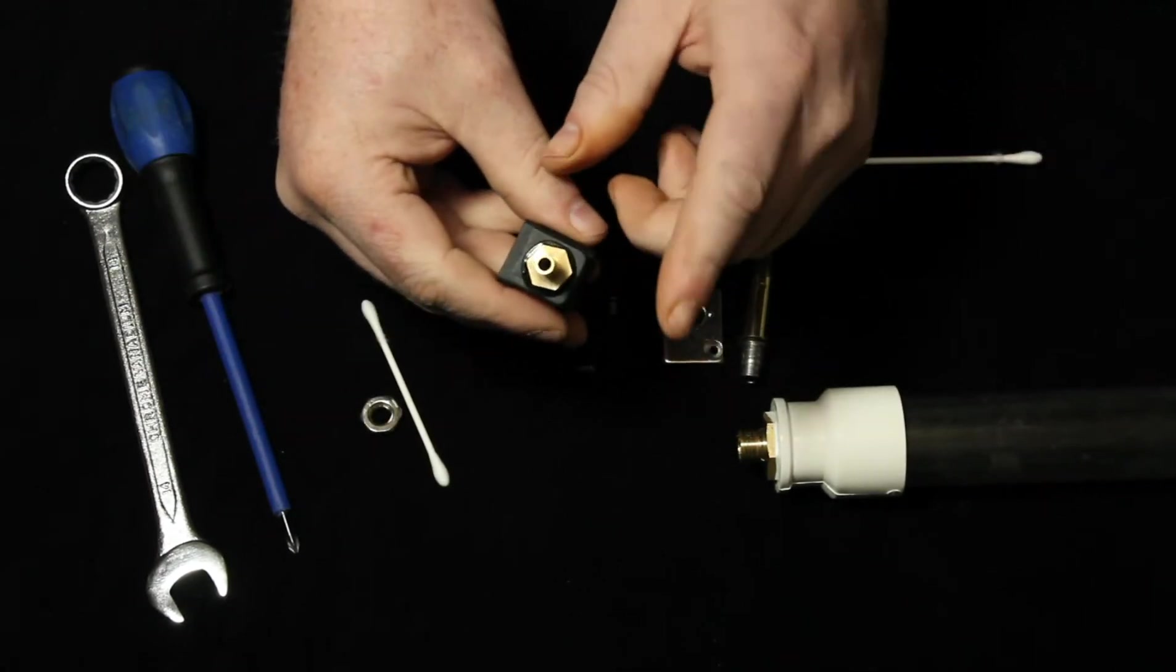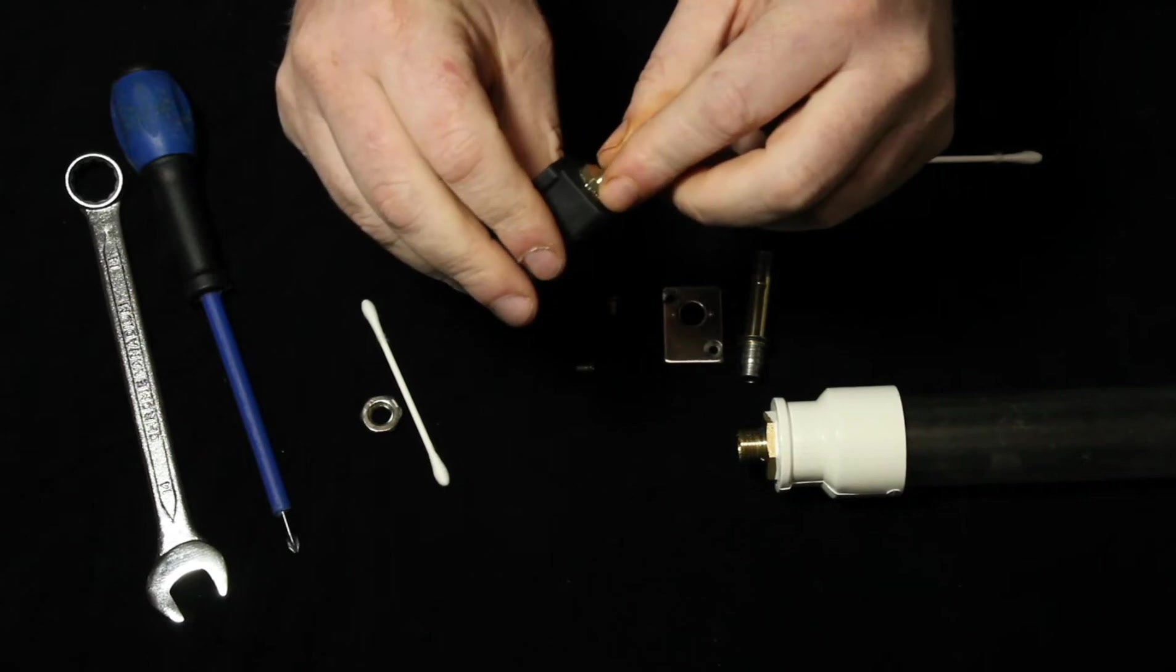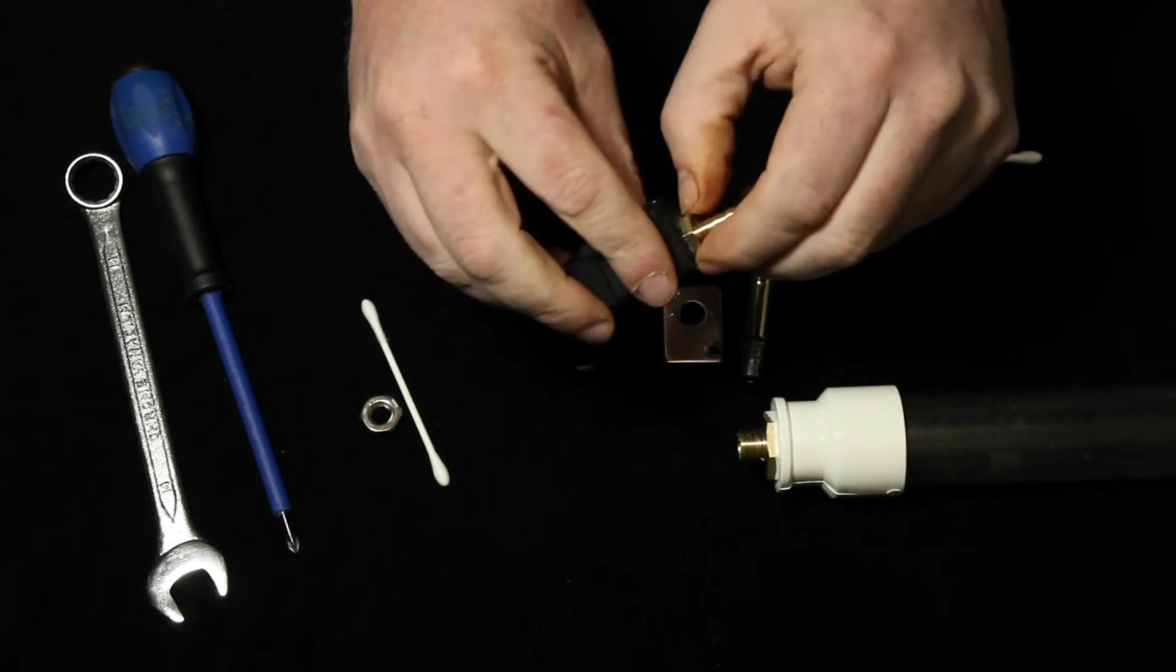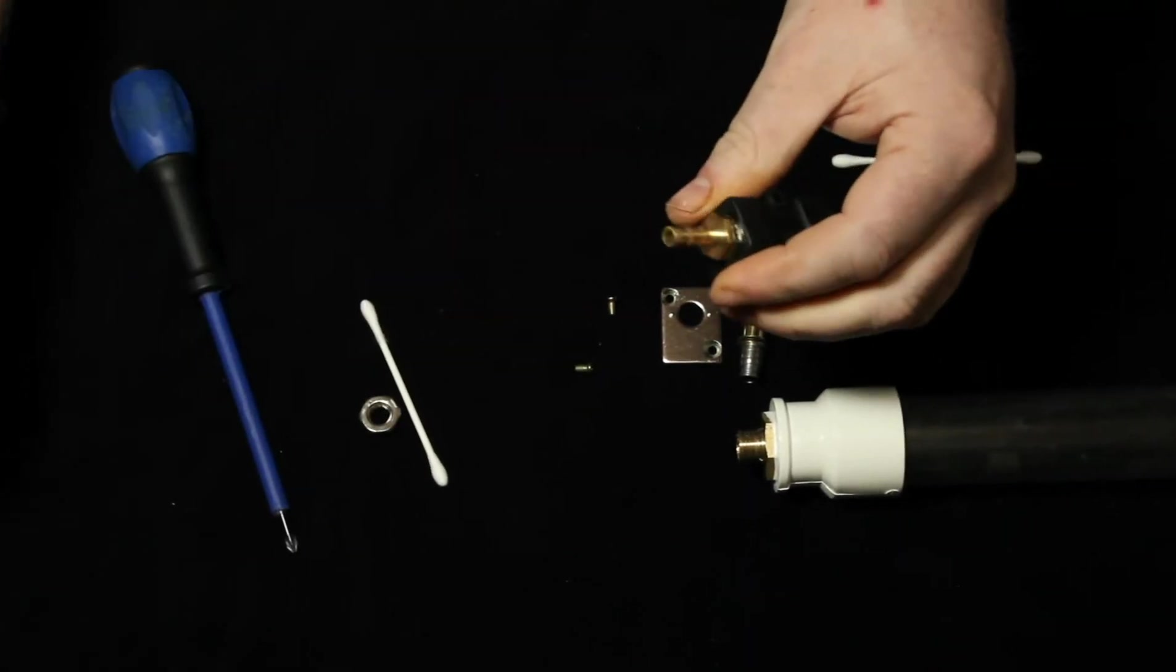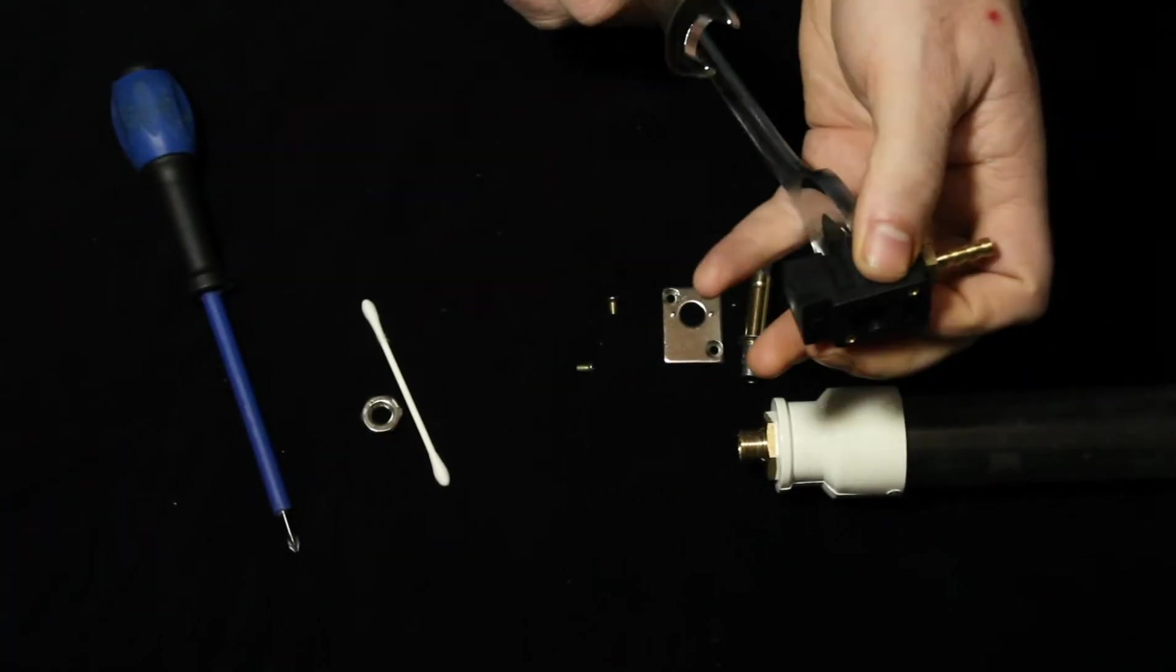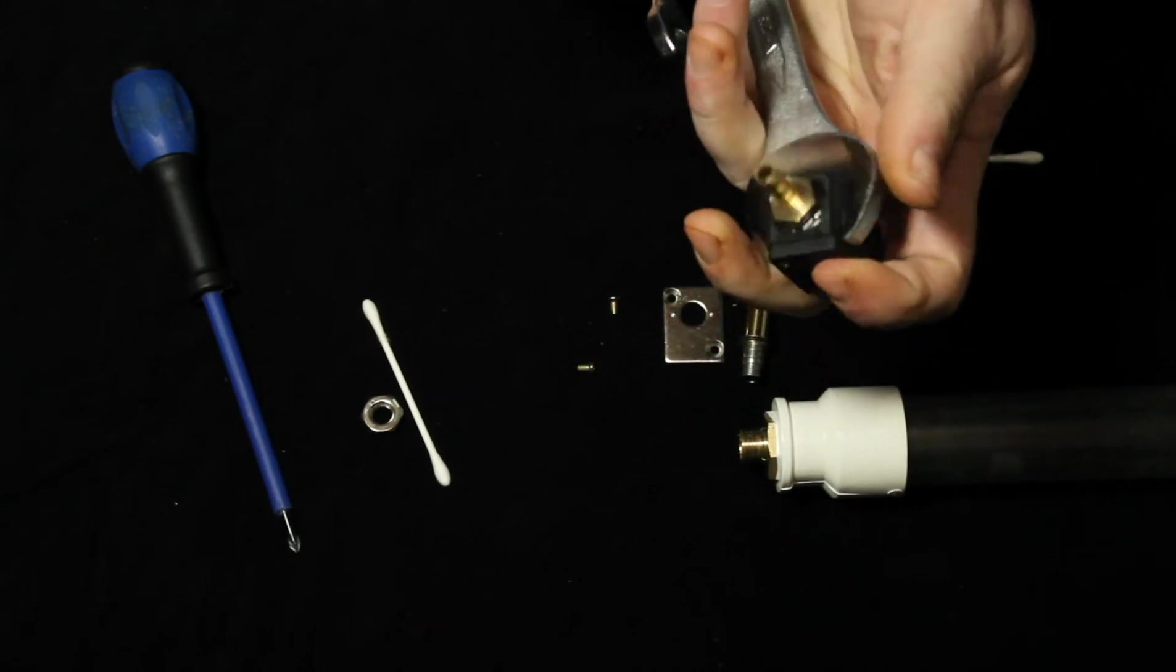Now what you might also need to do is take the actual nozzle off. Now I haven't done it on this one yet, but it's still sealed. This might give you a good demonstration of how tight it is.